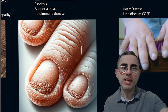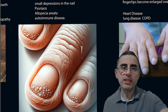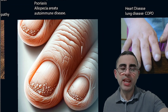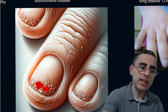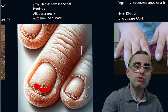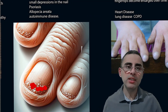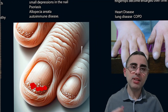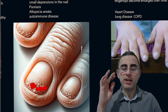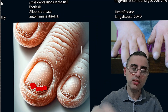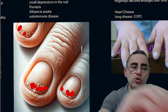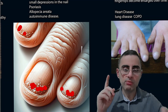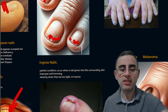Nail pitting refers to small depressions in the nail surface and is usually caused by psoriasis, sometimes alopecia areata, or other autoimmune diseases. These small depressions in the nails are generally a sign of autoimmune processes.